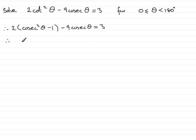What we've got to do is expand this. So expanding that we have 2 cosec squared theta minus 2, then minus 9 cosec theta equals 3. Now what I've got is the start of a quadratic equation in cosec theta, because we have a squared function here.